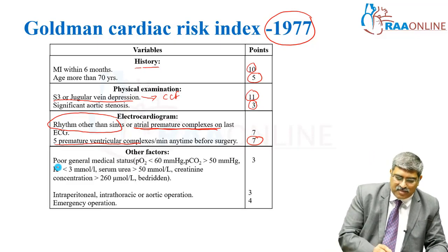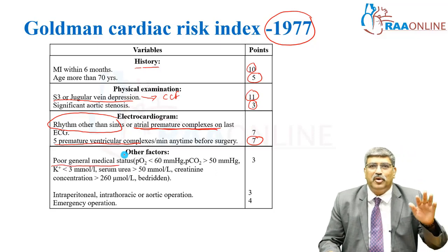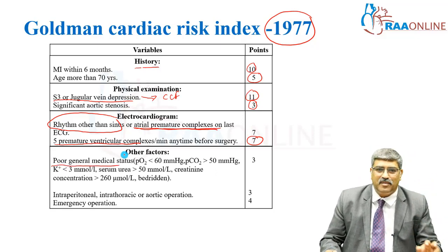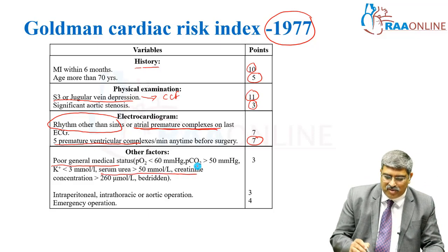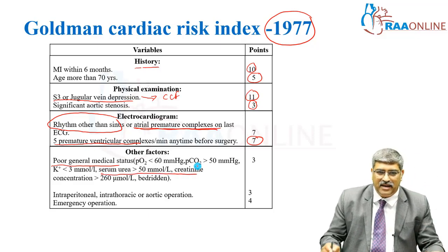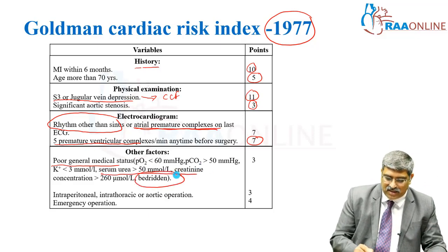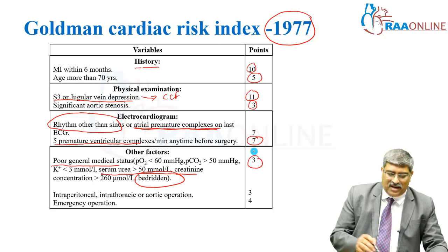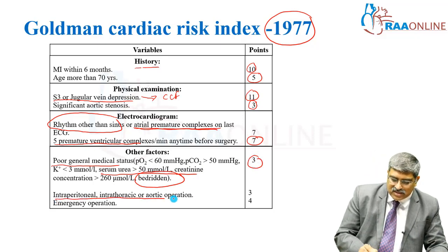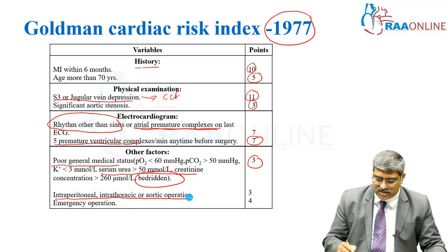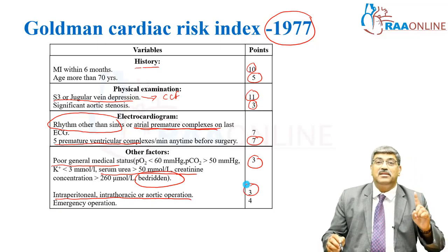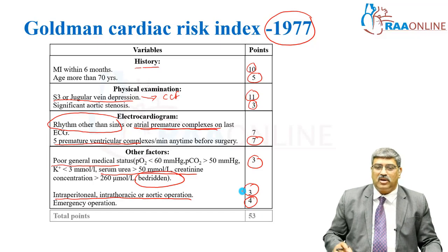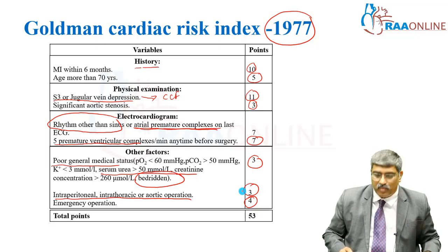Other factors: poor general medical condition of the patient — where PO2 is low, carbon dioxide is high, potassium is low, blood urea nitrogen and creatinine is high, and the patient is bedridden — is given 3 points. High-risk surgery like intraperitoneal, intrathoracic, or aortic operations is given 3 points, and emergency nature of surgery is given 4 points. The total is around 53 points.